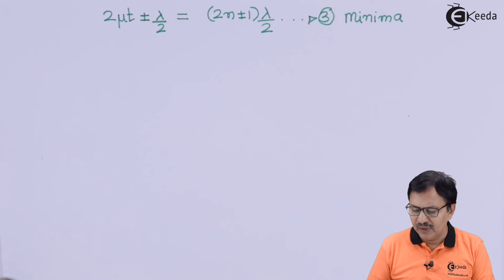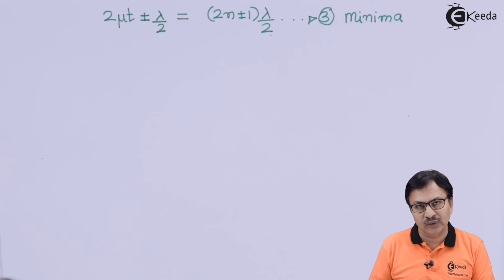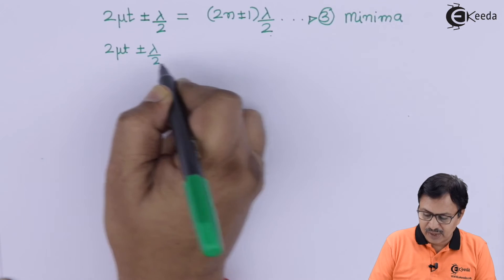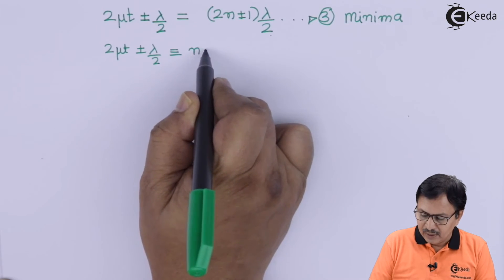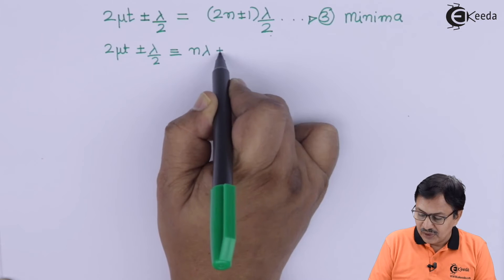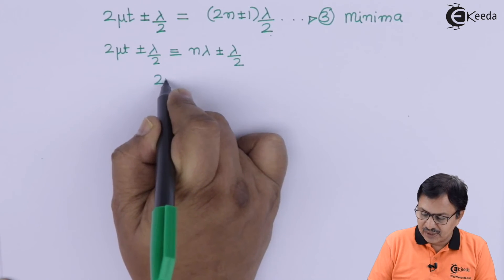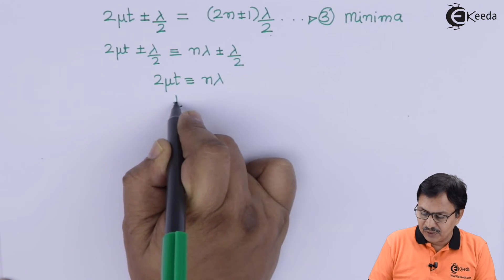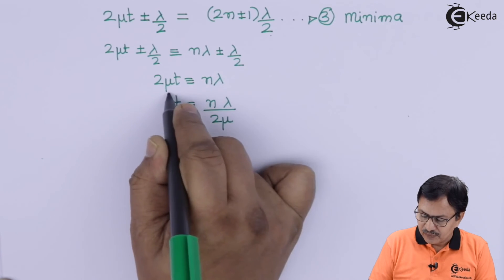Let us simplify: 2μt ± λ/2 = nλ ± λ/2. The λ/2 terms cancel, giving us the neat expression 2μt = nλ. Therefore, t = nλ / (2μ). This is the condition for the minima — for the dark Newton's ring.